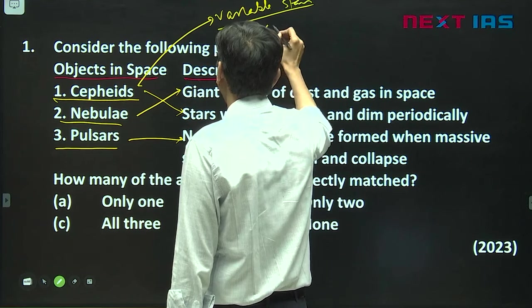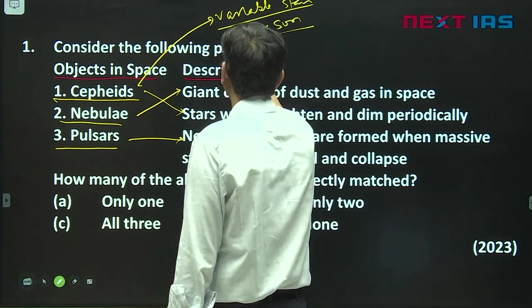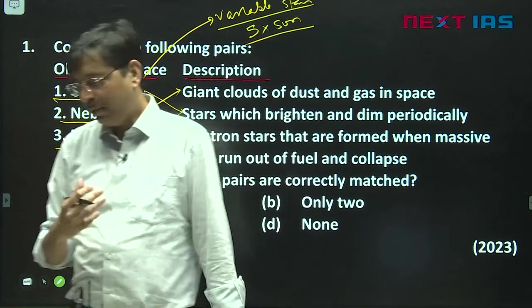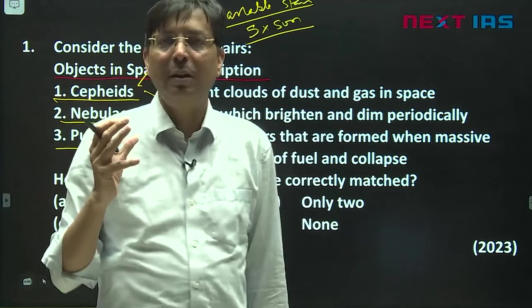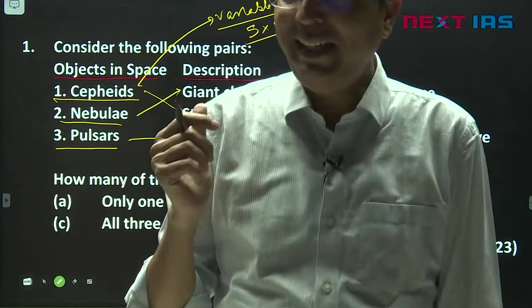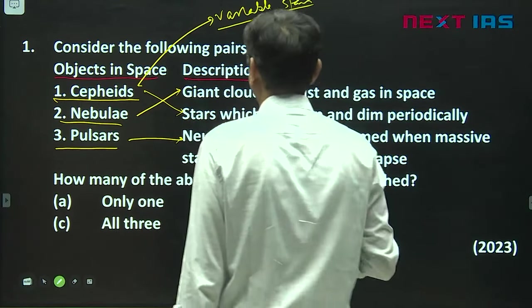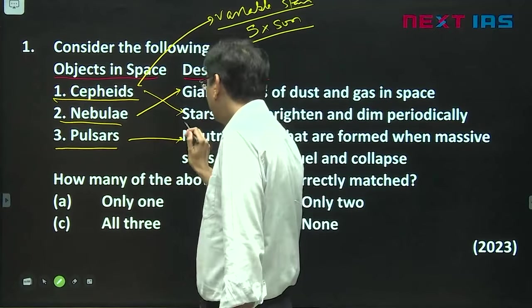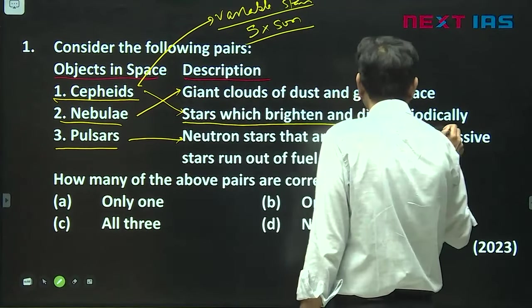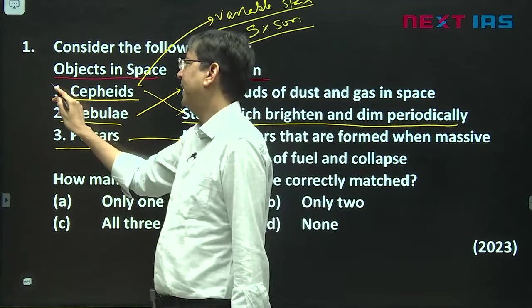Their mass is around five times the mass of the sun. Why are they called variable stars? Because they have this brightening up and dimming happening periodically. So that is what we call as Cepheid. For Cepheid, this is the right description, so obviously this is not correctly matched.